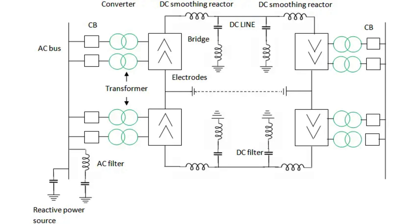Electrodes are conductors used to connect the system to the earth. Harmonic filters are used to minimize the harmonics in voltage and current of the converters. DC lines can be cables or overhead lines. Reactive power supplies: the reactive power used by the converters could be more than 50% of the total transferred active power, so shunt capacitors provide this reactive power.